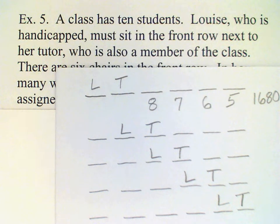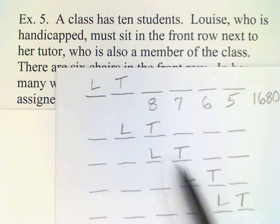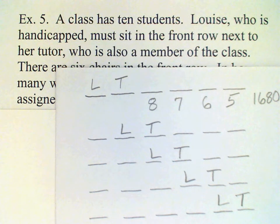And then there's one other permutation, which you may have already thought of. Namely, that in each of these cases, we have Louise sitting on the left. But there's nothing in the problem that says Louise has to sit on the left, only that she needs to sit next to her tutor. So if we switch all of these around, then that gives us another 5 possibilities.